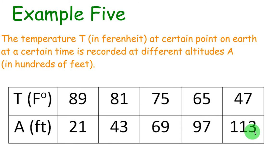So down here we have the altitude, which is actually the independent variable. First, we have 21, and it's in hundreds of feet. So at 2,100 feet, the temperature is 89 degrees.